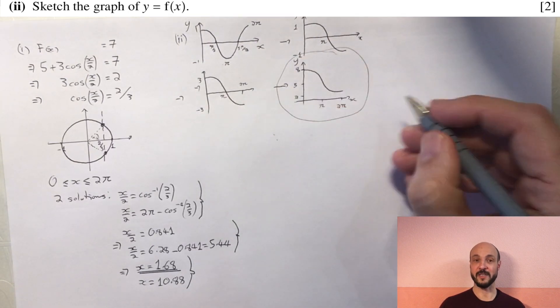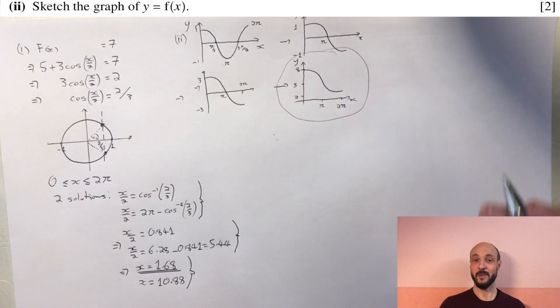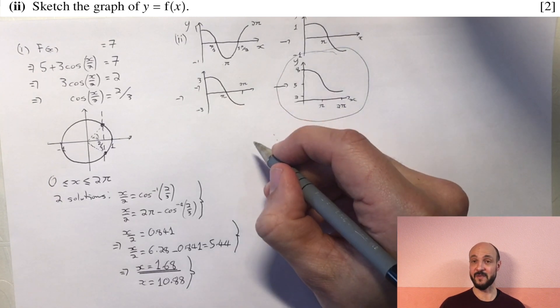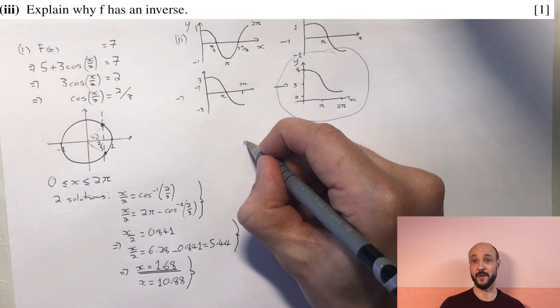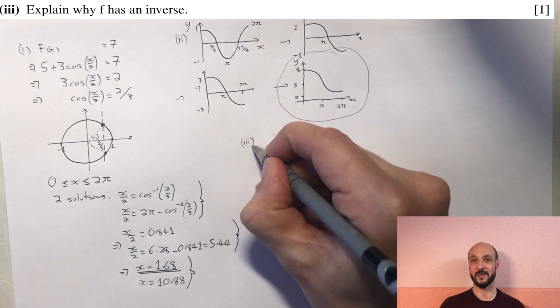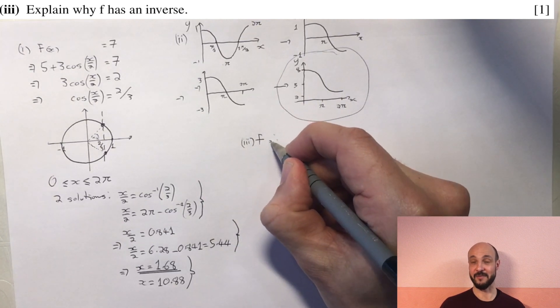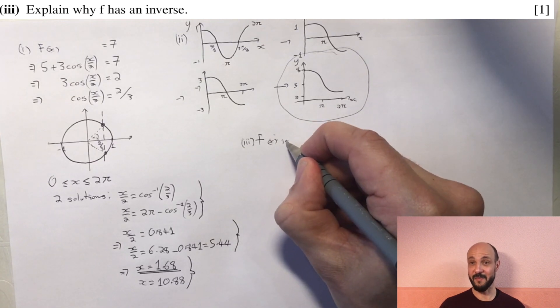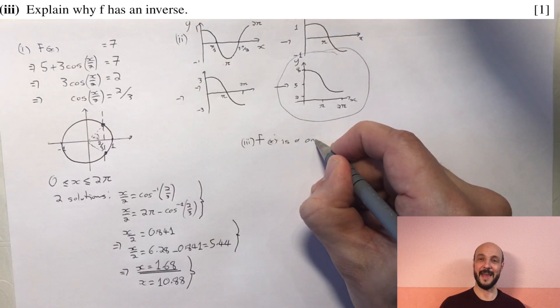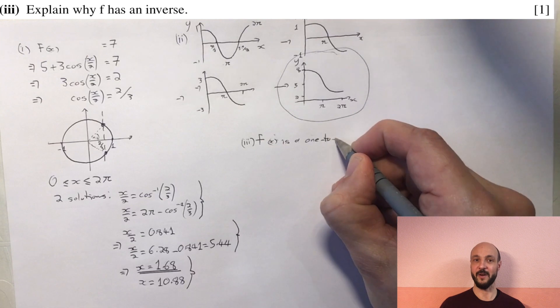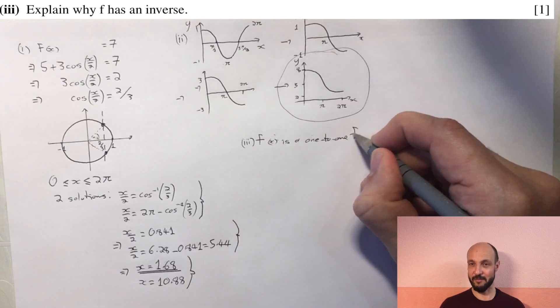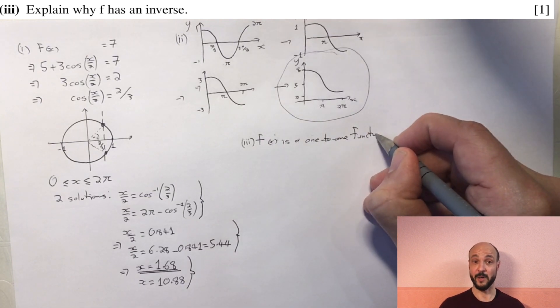We then, one mark for explaining why f has an inverse. We simply need to say that f has an inverse because it is a one-to-one function. Remember, for a function to exist there has to be a y value for every different x value. And for the inverse to exist, there has to be an x value for every different y value, and that is true because in our restricted domain it's a one-to-one function.